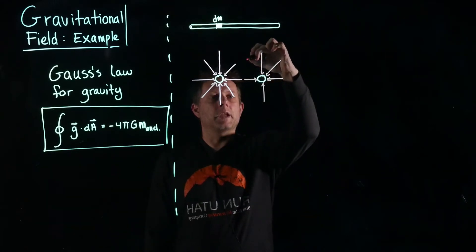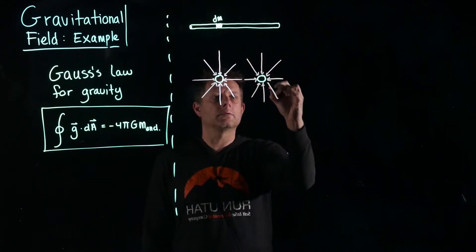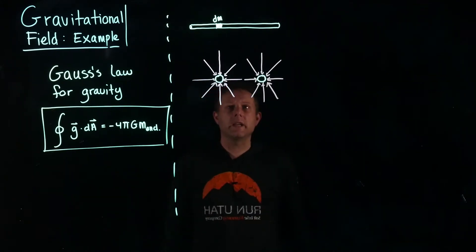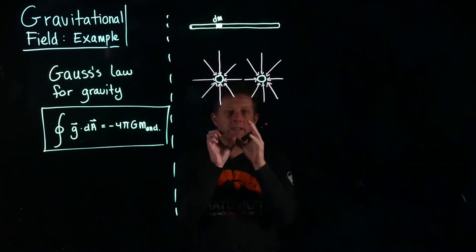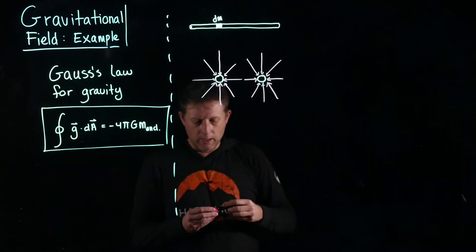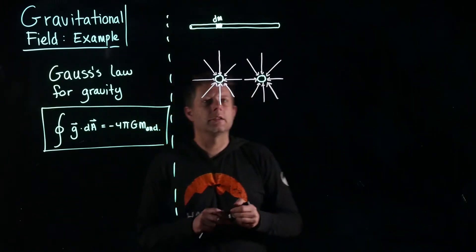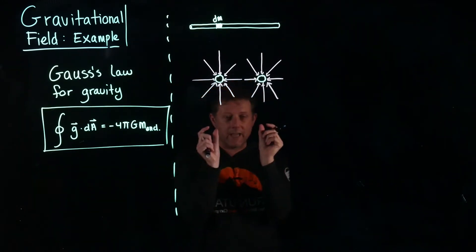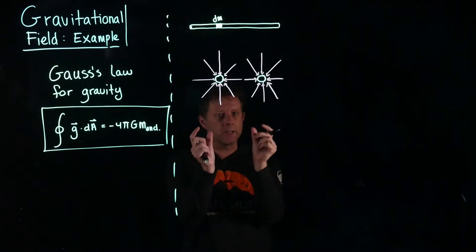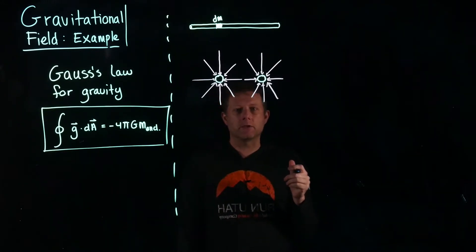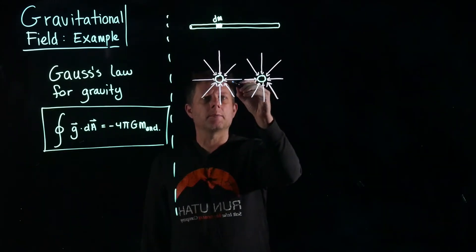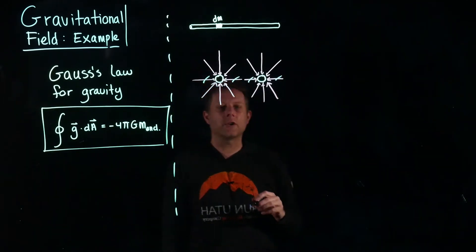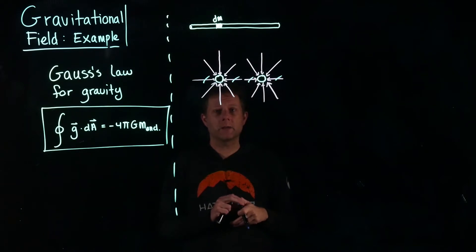Think of these as being identical mass elements. Take this rope and break it up into a bunch of tiny little segments — each segment will have exactly the same shape. These two elements, being the same mass, will have the same magnitude but opposite directions, so they add up to zero. Similarly, these other two contributions of the fields also have opposite directions and the same magnitude, so they also add up to zero.